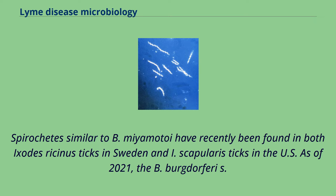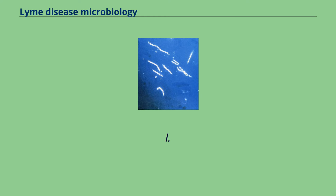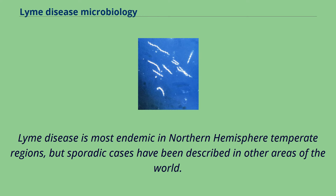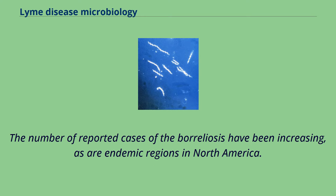As of 2021, the B. burgdorferi sensu lato species complex is known to include the following species; as these species are mainly differentiated by genetics, they are usually referred to as genospecies. Lyme disease is most endemic in northern hemisphere temperate regions, but sporadic cases have been described in other areas of the world. The number of reported cases of borreliosis have been increasing, as are endemic regions in North America.